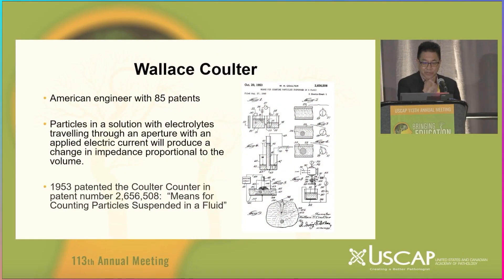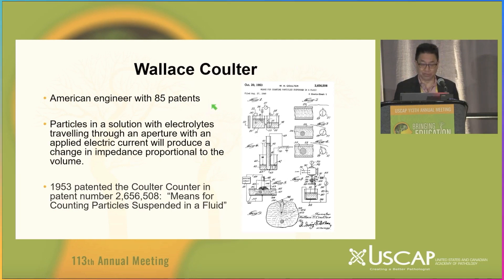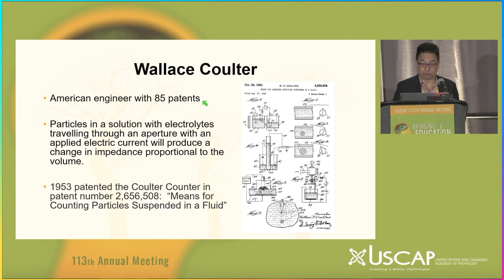This story about flow cytometry actually starts out with Wallace Coulter. He was an American engineer with 85 patents under his name. He discovered that when you suspend particles in a solution of electrolytes and make them pass through an aperture with an applied electrical current, you get a change in impedance related to resistance. He patented this concept in 1953.